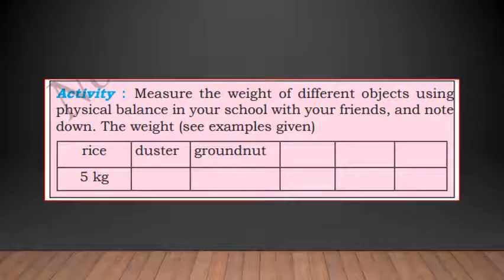Now there is activity in page number 148. Measure the weight of different objects using physical balance in your school with your friends and note down the weight. See examples given. Rice 5 kg. In your house when you go to buy something you can measure these things and see. When you are buying certain things to your house it is weighed and then we buy it.